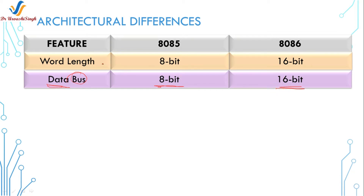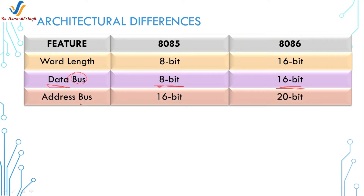The next feature is the address bus. The address bus carries the address for the microprocessor. In the 8085 it is 16-bit, and in the 8086 microprocessor it is 20-bit. From the address bus you can find out the size of the memory that a microprocessor can be interfaced with, or the number of memory locations the microprocessor can allocate.